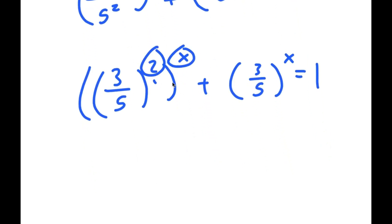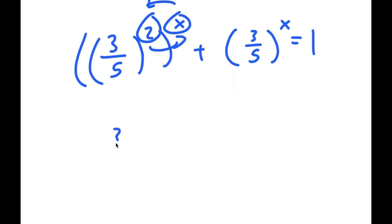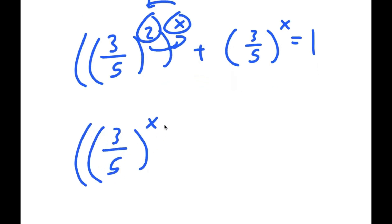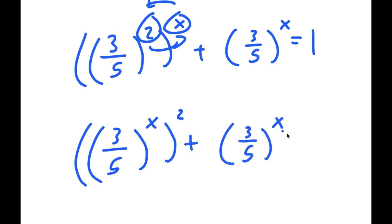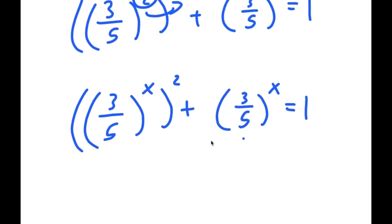I can actually swap the places of these, so I get 3 over 5 to the power of x, to the power of 2, plus 3 over 5 to the power of x is equal to 1.